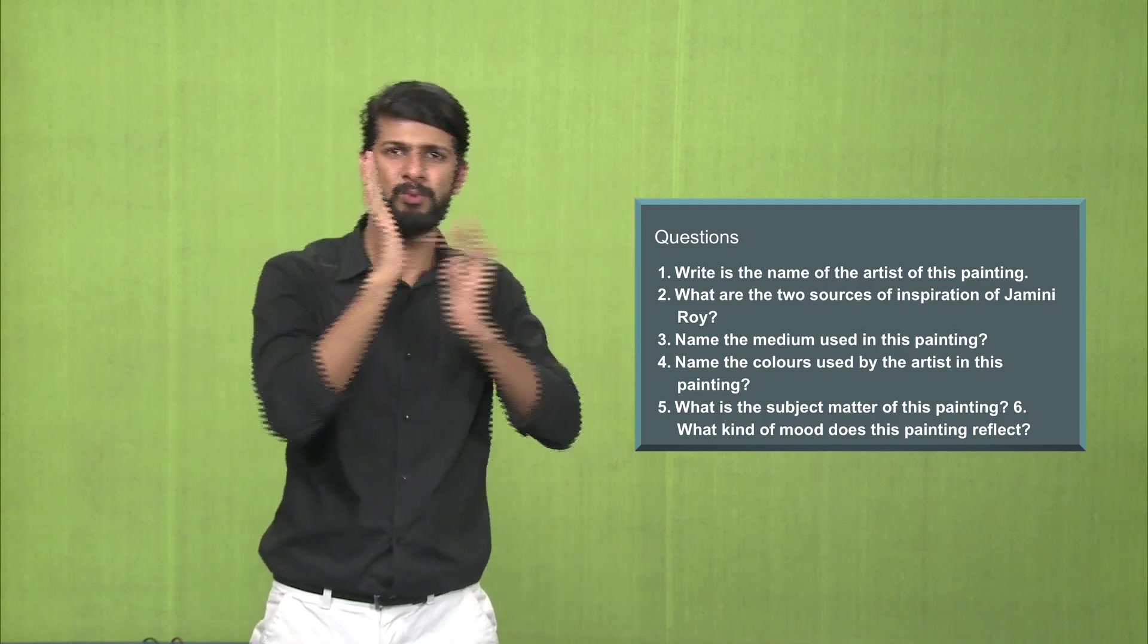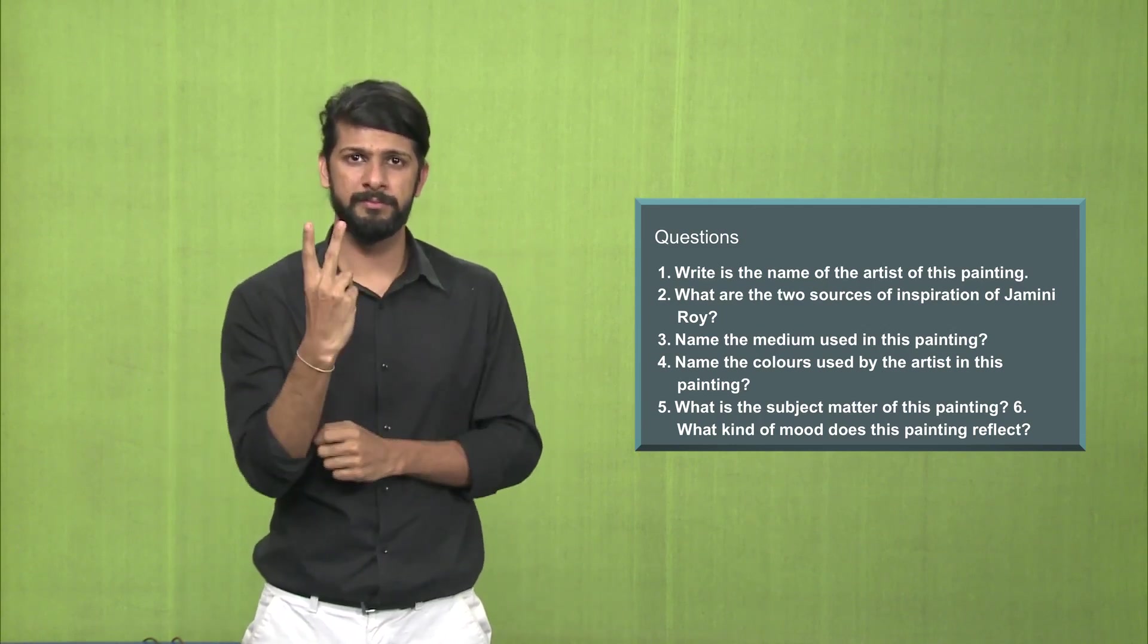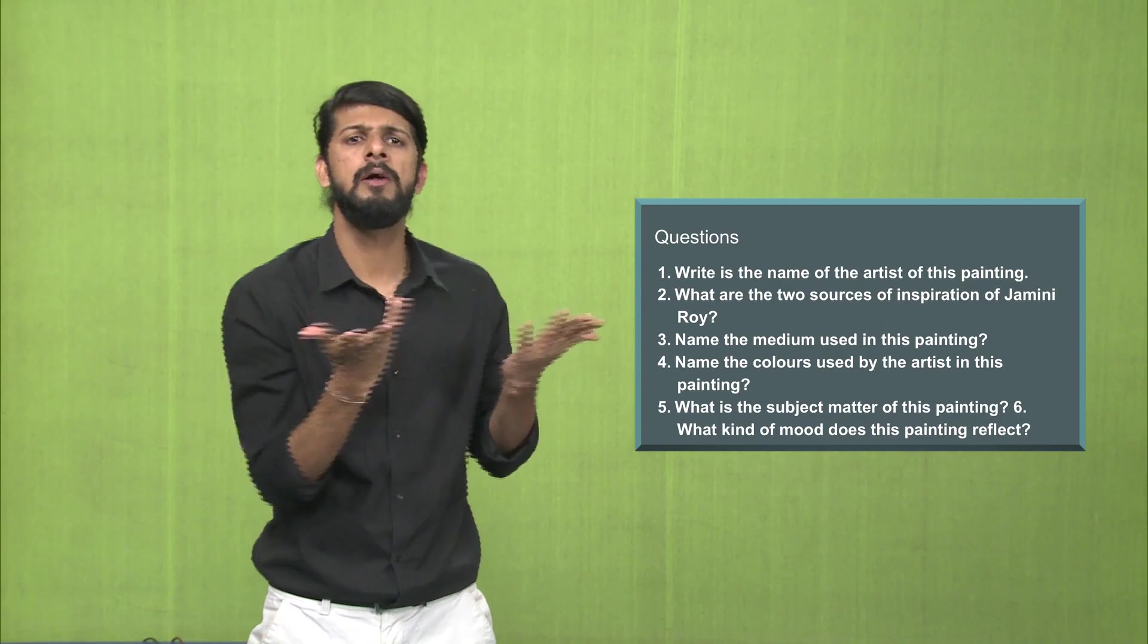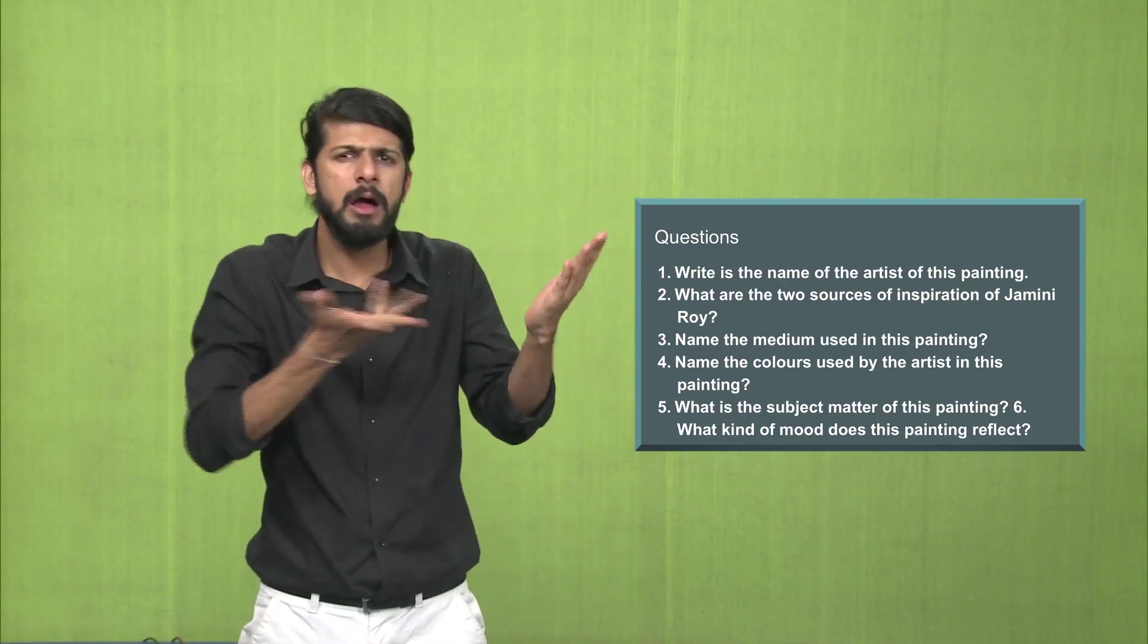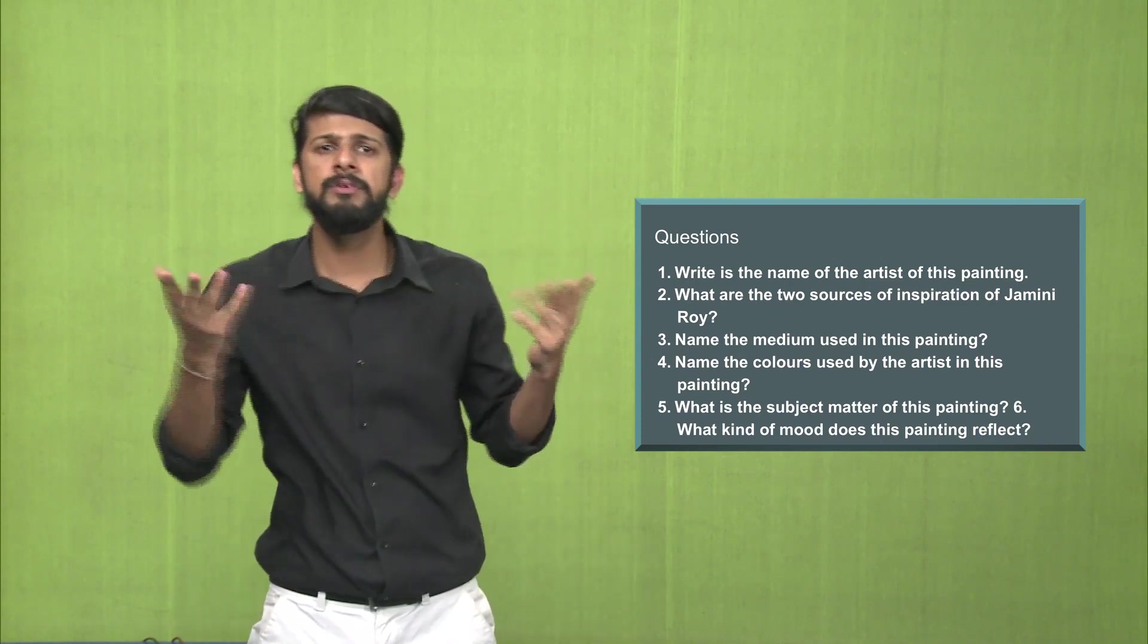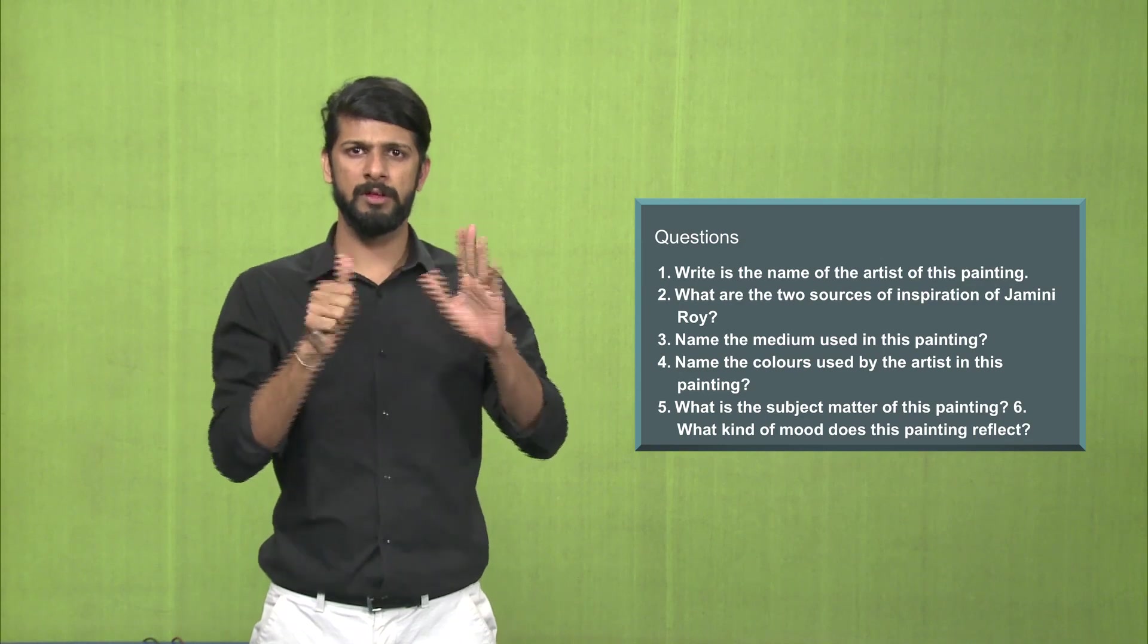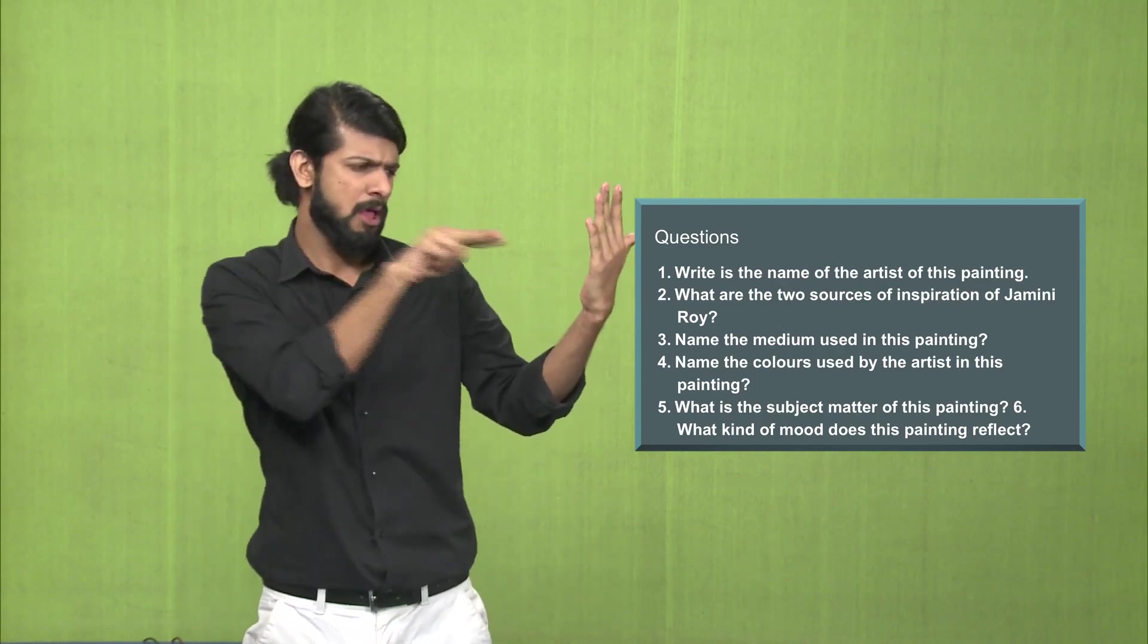Questions related to the second painting. Question number 1, write the name of the artist of this painting, that is the crucifixion, who is the artist. Question number 2, Jamini Roy was inspired by two sources of art. What are the two sources of his inspiration? Question number 3, name the medium used in this painting. Question number 4, name the colors used by the artist in this painting. Question number 5, what is the subject matter of this painting? Question number 6, what kind of mood does this painting reflect?